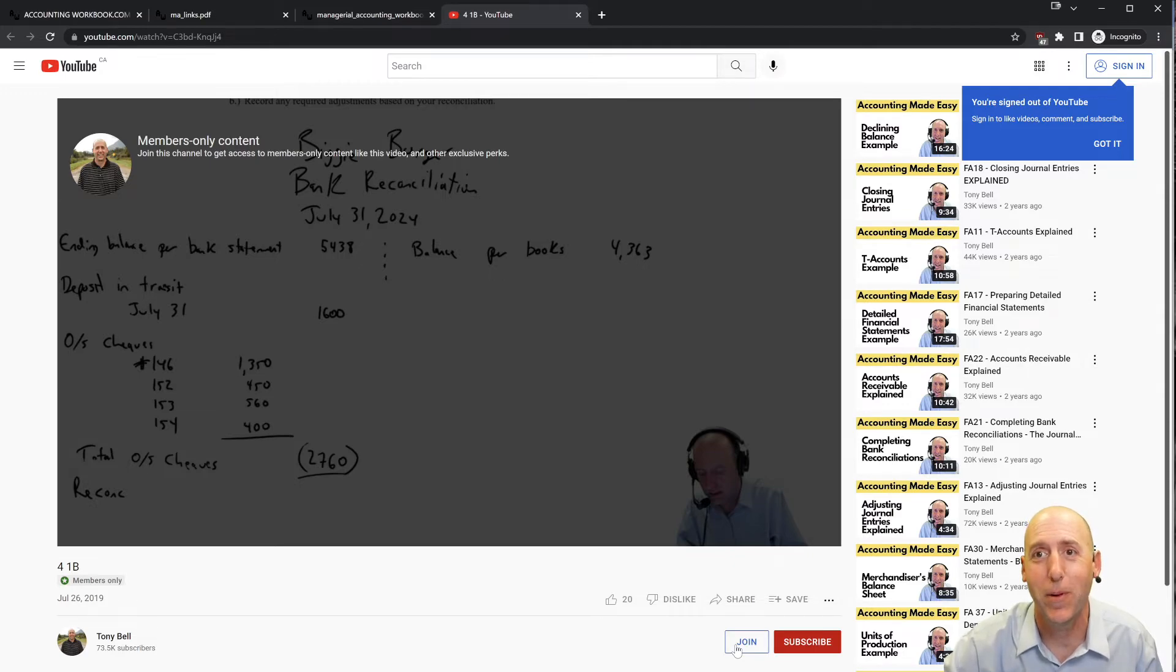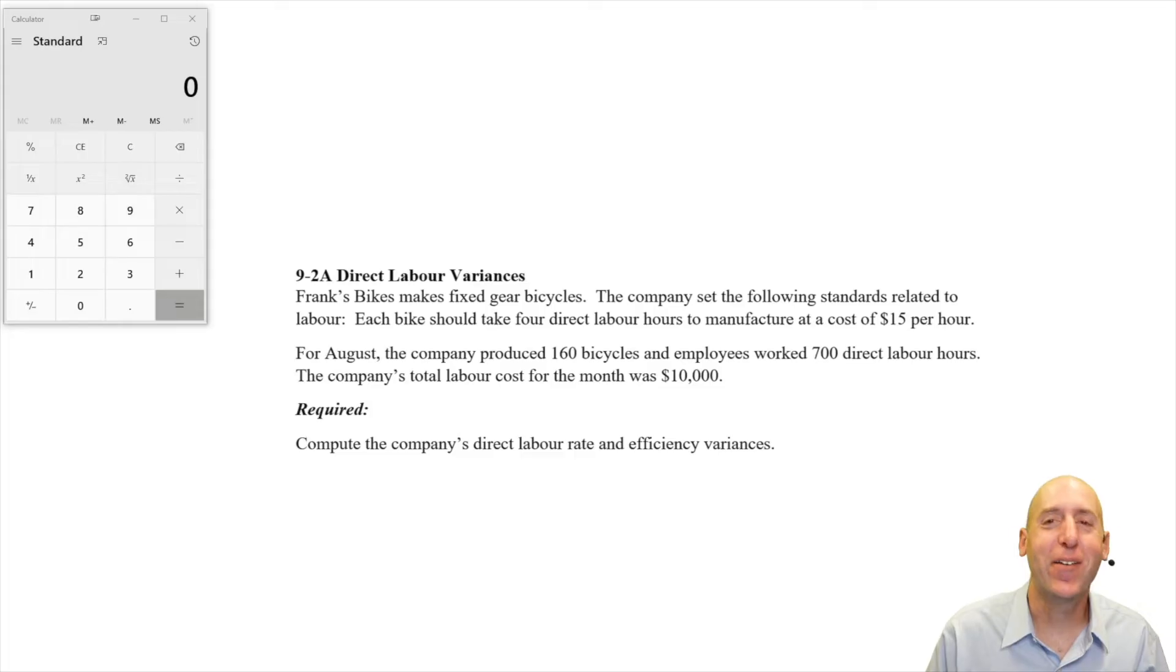Okay, let's jump into the problem. Let's take a look at problem 9.2a. This problem has us doing labor variances. We've done material variances and material variances are harder actually than labor variances, so hopefully this is straightforward as we work through it. Let's go through an example.